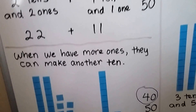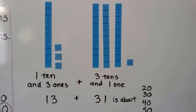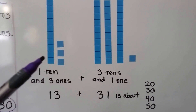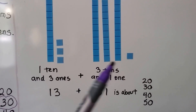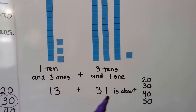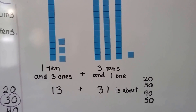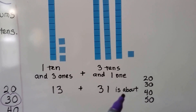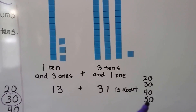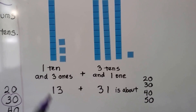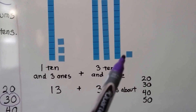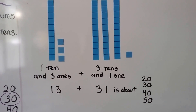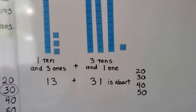Let's try this. Here we've got one ten and three ones — that's a thirteen. And here we have three tens and one one — that's thirty-one. Thirteen plus thirty-one is about — do you know? Twenty, thirty, forty, or fifty? Let's count the tens: one, two, three, four. We don't have a lot of ones, so we can just say it's about four tens. So if you said forty, you're correct.